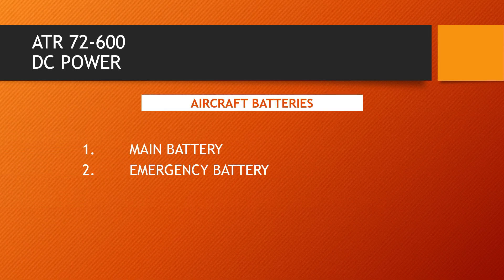Now I shall discuss about aircraft batteries. First, the Main Battery: a 24-volt nickel-cadmium battery of 43 ampere-hour is provided for engine starting and for emergency power supply, including propeller feathering.